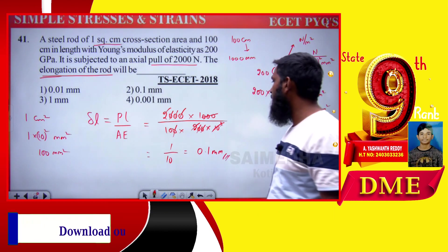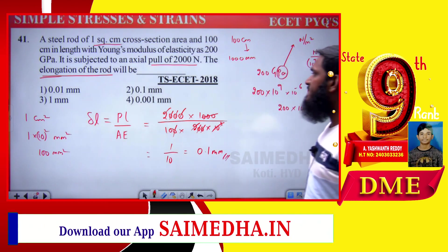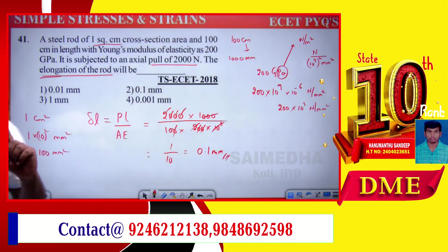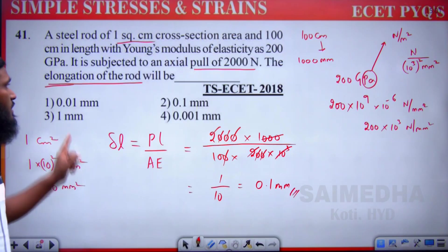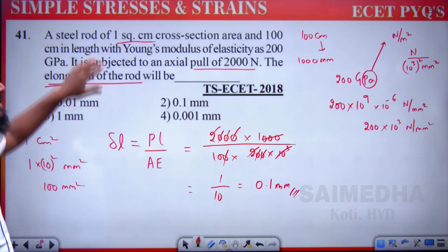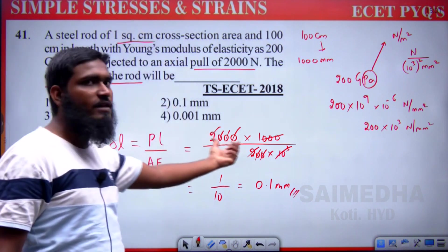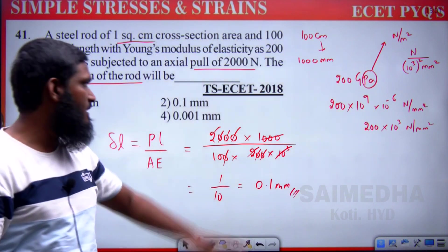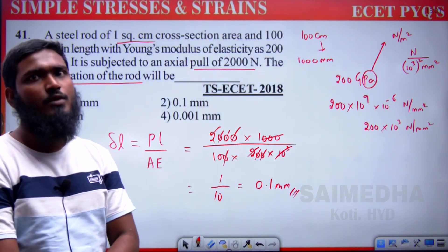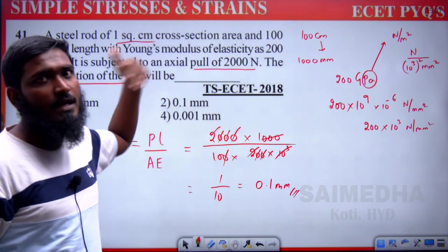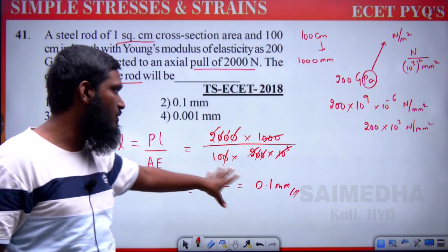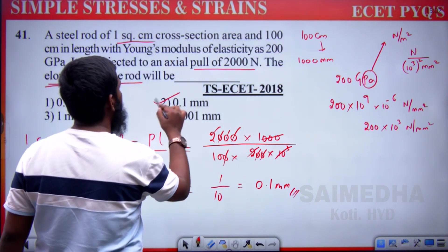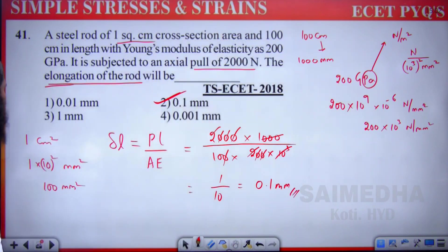Final answer: elongation of the rod = 0.1 mm. Always check units; substitute values directly in mm to avoid errors. Option 2 is correct.